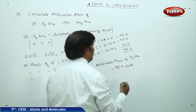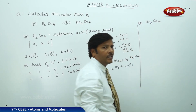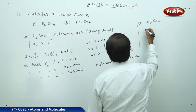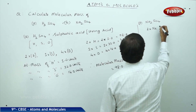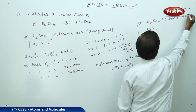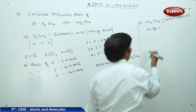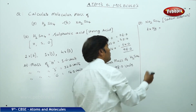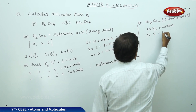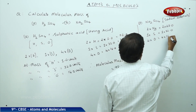Likewise, for sodium sulfate Na2SO4, we take the number of sodium, sulfur, and oxygen atoms. There are 2 sodium atoms, and the atomic mass of sodium is 23.0 units, so 2 into 23.0. Then 1 sulfur, so 1 into 32.0. Then 4 oxygens, so 4 into 16.0.